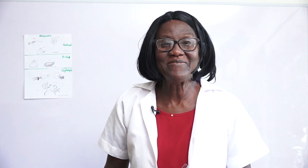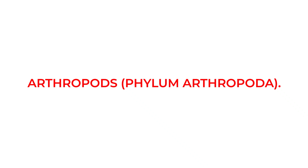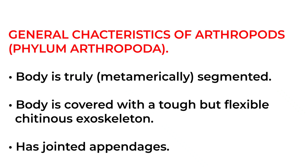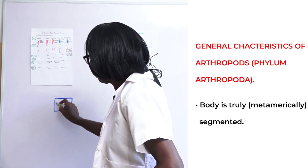Welcome to Biology Made Easy. Let's look at arthropods and their characteristics. Their bodies are truly segmented, they have an exoskeleton of chitin, and they have jointed appendages. Let's explain what these three mean.